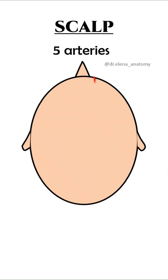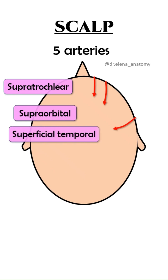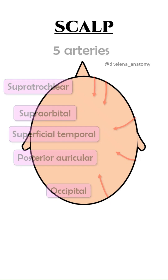It has five arteries: supratrochlear, supraorbital, superficial temporal, posterior auricular, and occipital. Supratrochlear and supraorbital are branches of the ophthalmic artery, and the rest are branches of the external carotid artery.